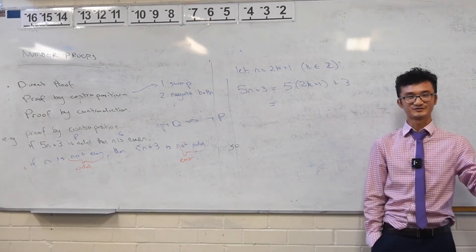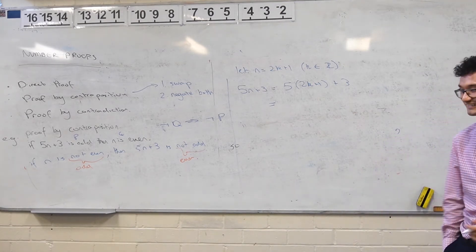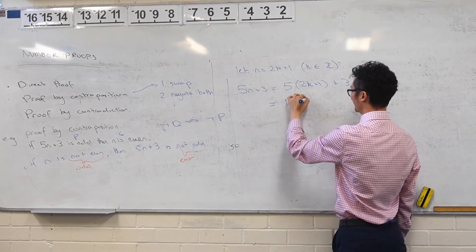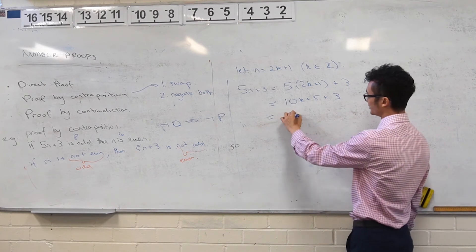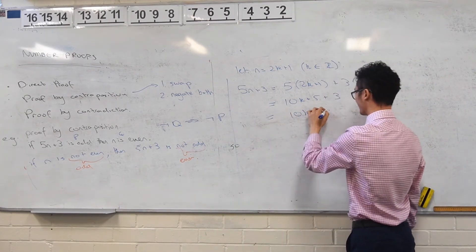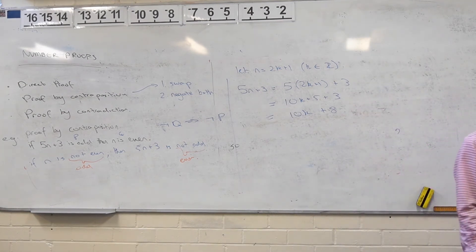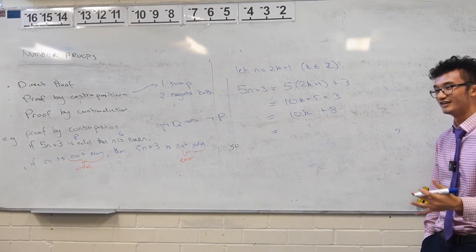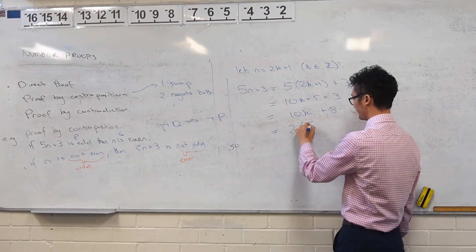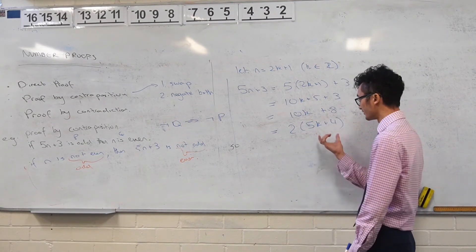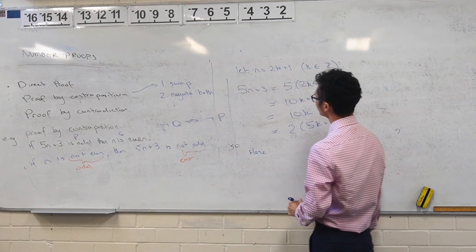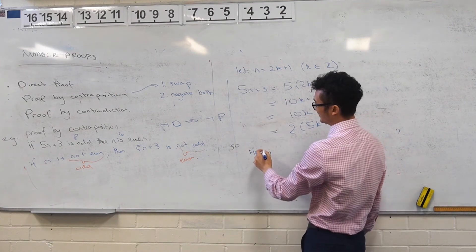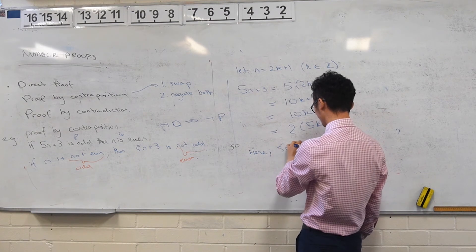What options do we have here? Expand. So that'd be 10k plus 5 plus 3. Let's group some like terms. What are we trying to do? We're trying to show that this is even. Factorize — prove beyond all reason or doubt. So I want to take out that factor of 2: 2 times (5k plus 4). So 2 times something is always going to be even. Hence 5n plus 3 is not odd.